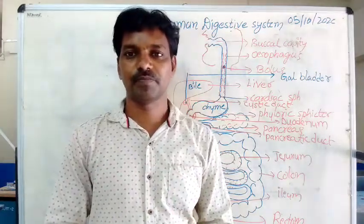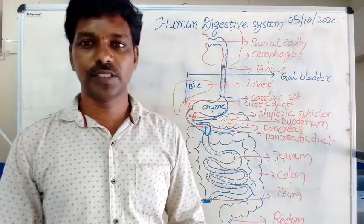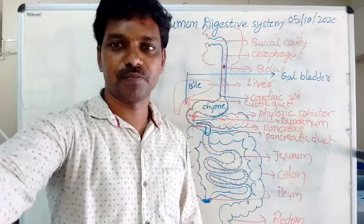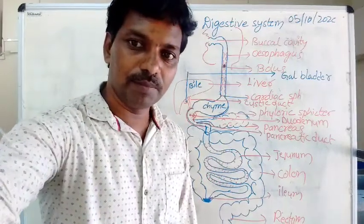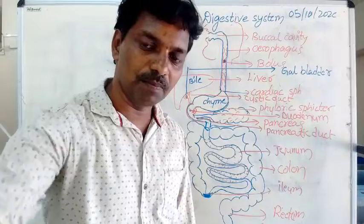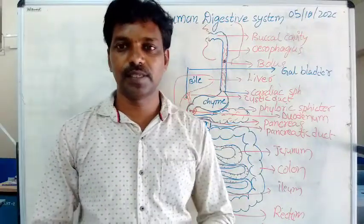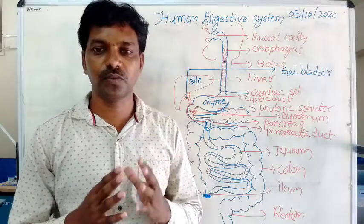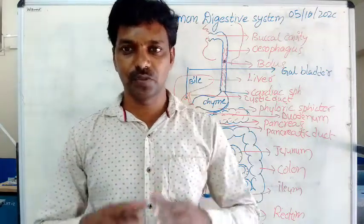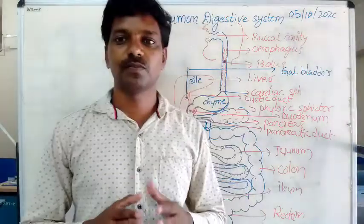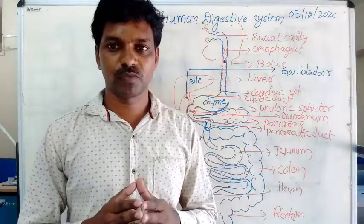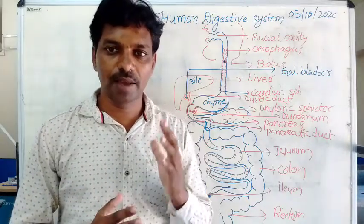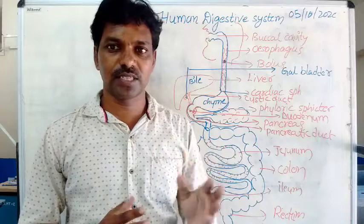Good afternoon students. Today we are going to discuss about the last part in the human digestive system. Already in the previous classes we discussed about three parts: Human digestive system part 1, part 2, part 3. Today we are going to discuss about part 4. Before starting part 4, I am going to recall the first, second and third one.